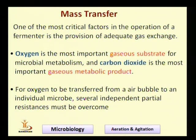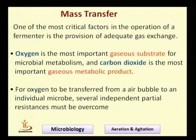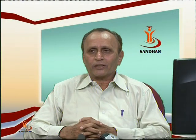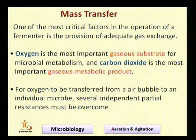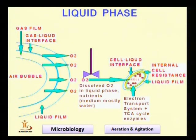Mass transfer is not only used for gas but can also be used for other substances. Mainly, when a substrate is transferred from one place to another in a fermentation system, we use the term mass transfer. The overall transfer rate from the point of entry to the ultimate destination depends on the kinds of resistances offered during its travel, and we will look at what paths and resistances are involved.